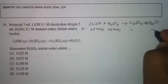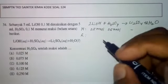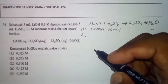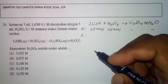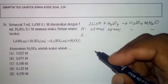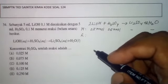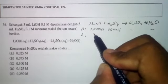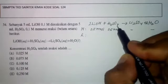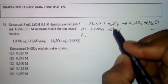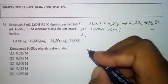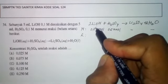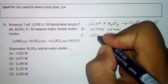Setelah reaksi, kita perlu mencari reaktan pembatas. Cara mencari reaktan pembatas adalah bagi jumlah mol dengan koefisien reaksinya; hasil bagi terkecil itulah pereaksi pembatasnya. Untuk LiOH, hasil baginya adalah 0,5 ÷ 2 = 0,25. Untuk H2SO4, 0,5 ÷ 1 = 0,5. Dengan demikian pereaktan pembatasnya adalah LiOH, sehingga semua LiOH habis bereaksi, yaitu sebanyak 0,5 milimol.